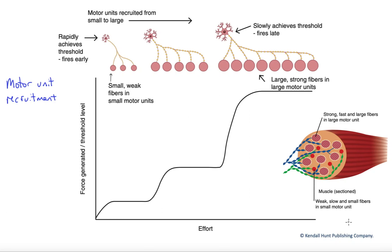In this figure, we're going to look at how skeletal muscle is stimulated to contract to differing degrees. This is somatic motor control — controlling the skeletal muscles — and it's going to follow a mechanism called motor unit recruitment.